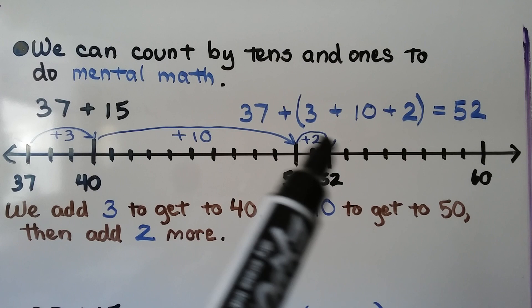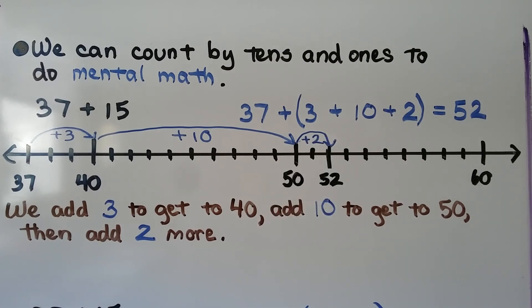Then we add the last 2 and that gets us to 52. So we added 3 to get to 40, then added 10 to get to 50, then added 2 more. We can do that in our head. We can use mental math.